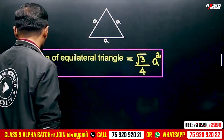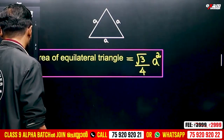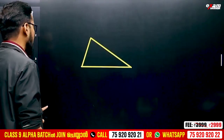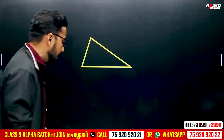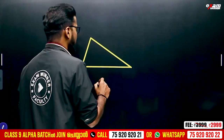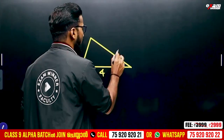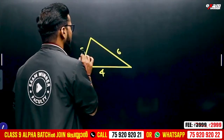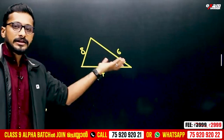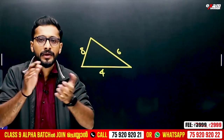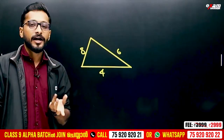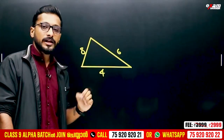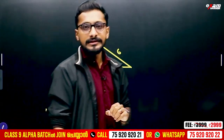I can see the triangle here. The sides are 4, 6, 8. Now if you don't have half a base and height, you can't see root 3 by 4 S squared — it's not applicable.